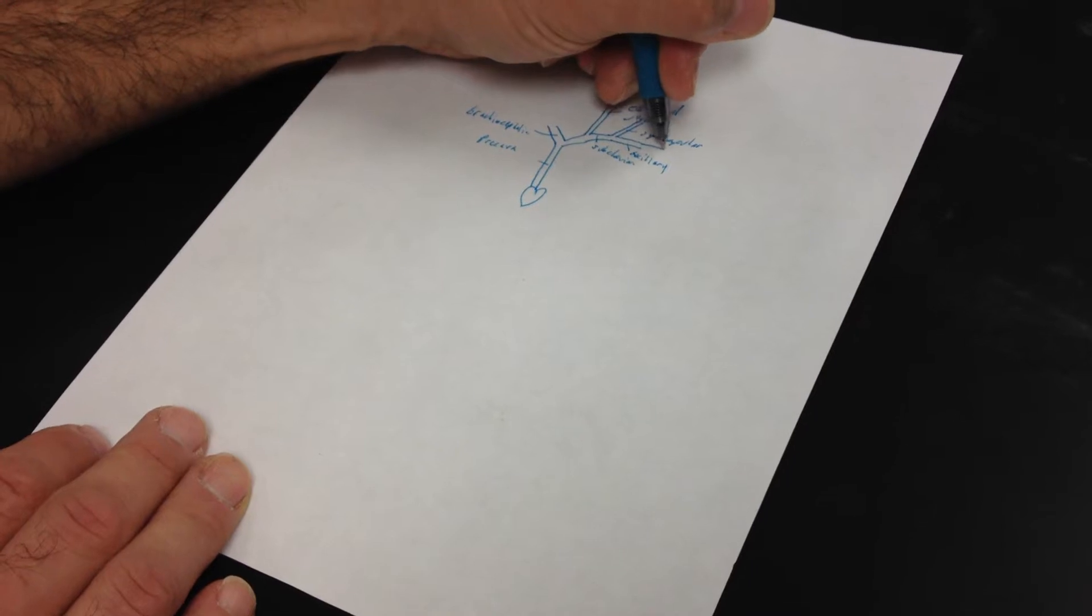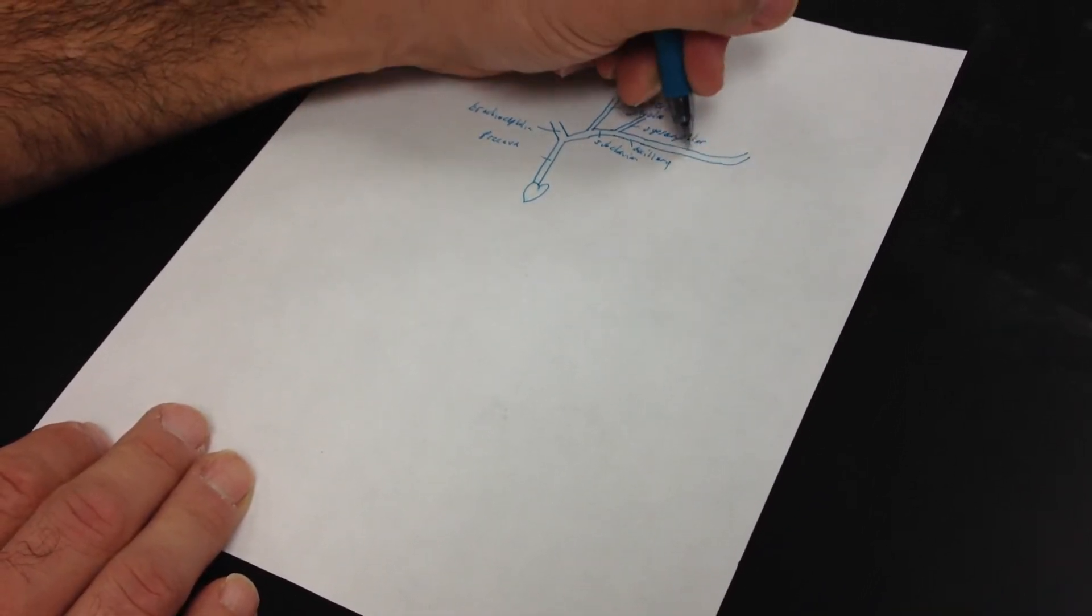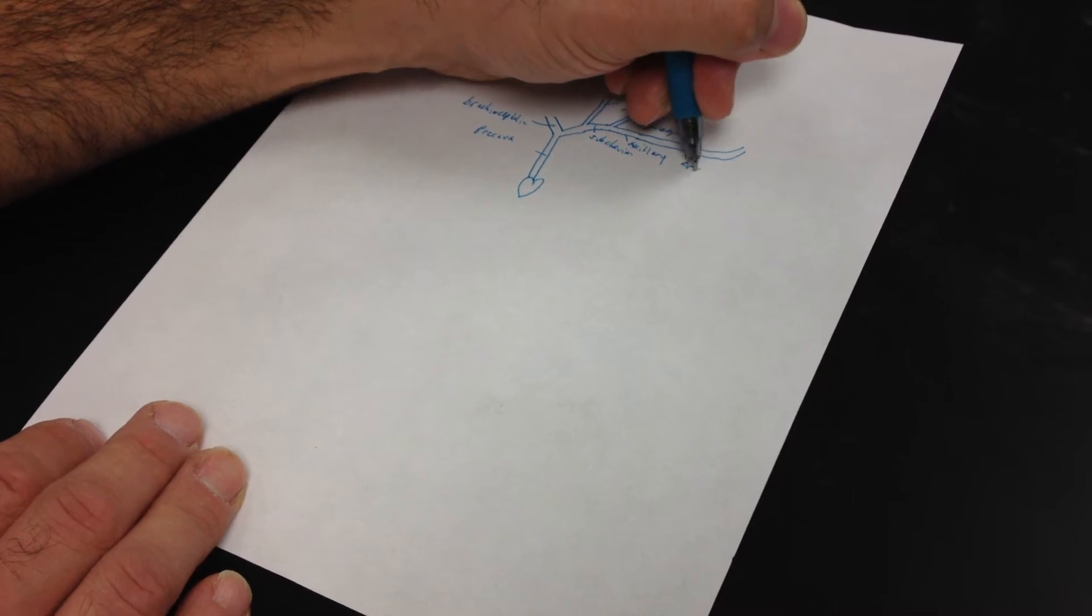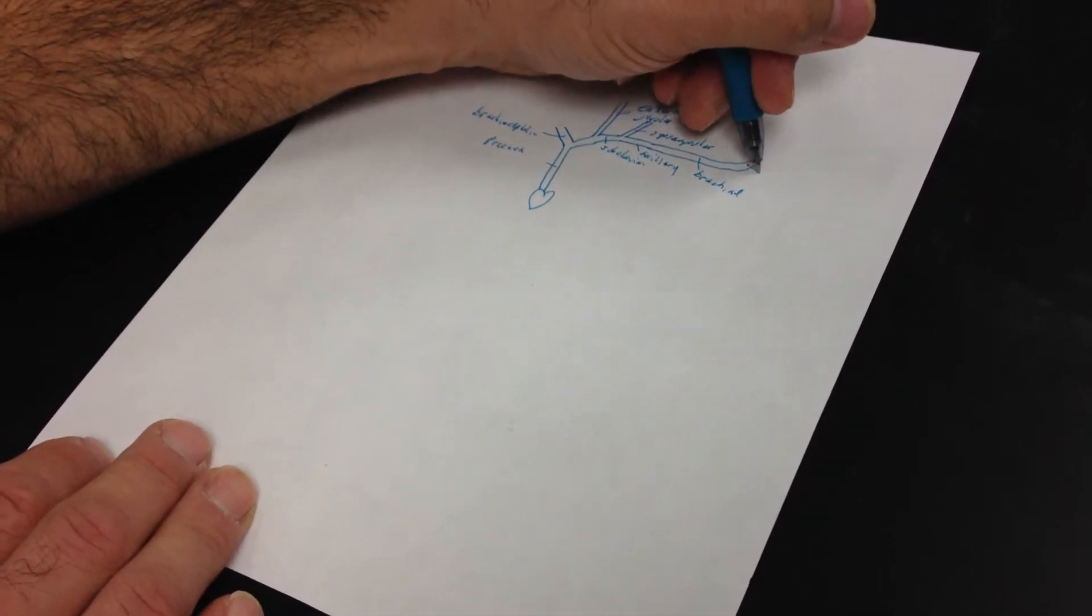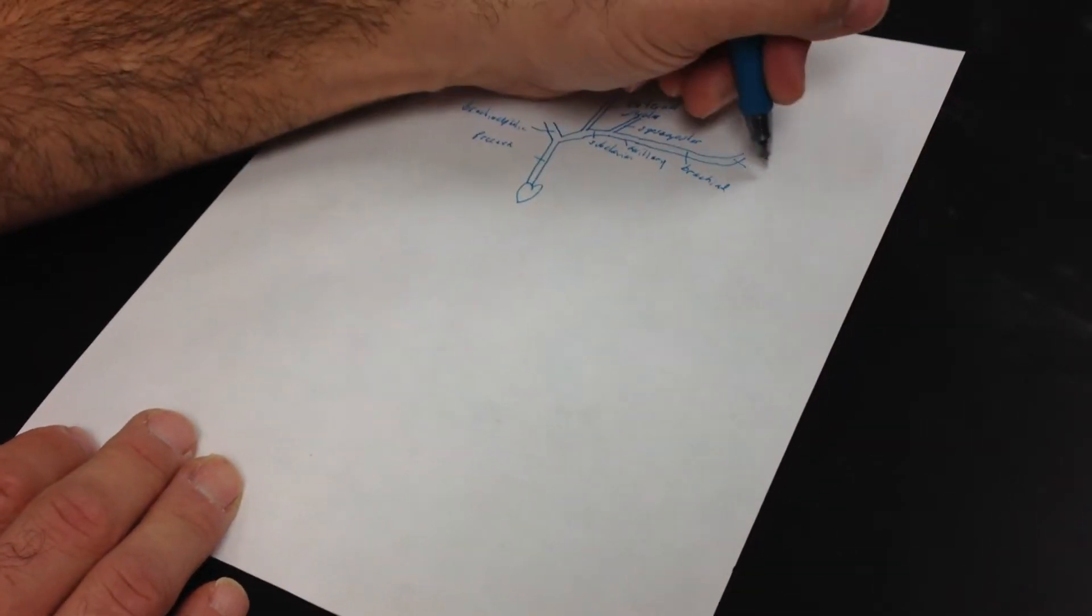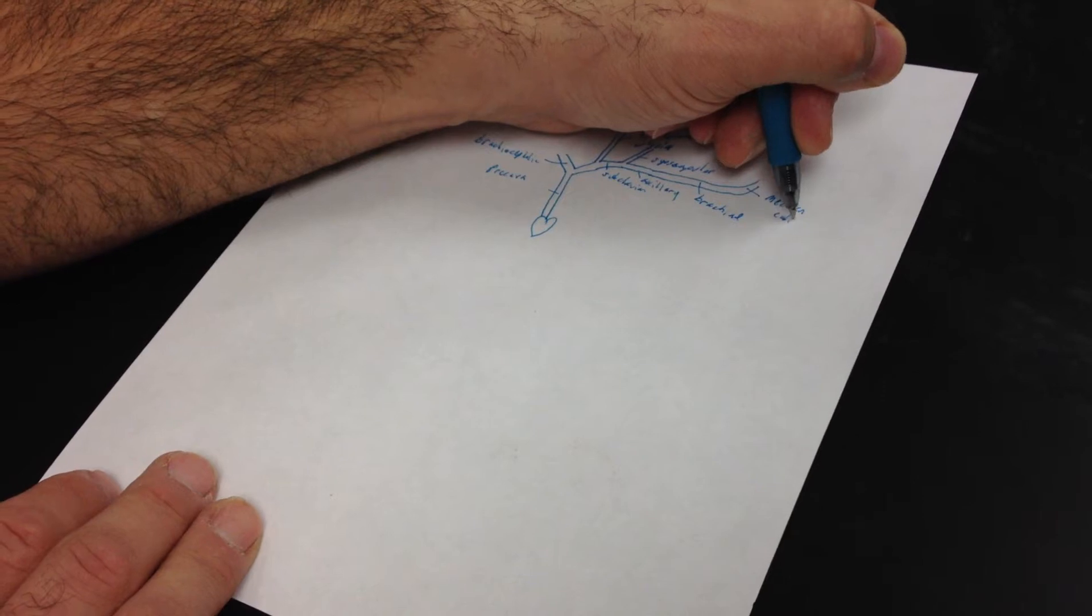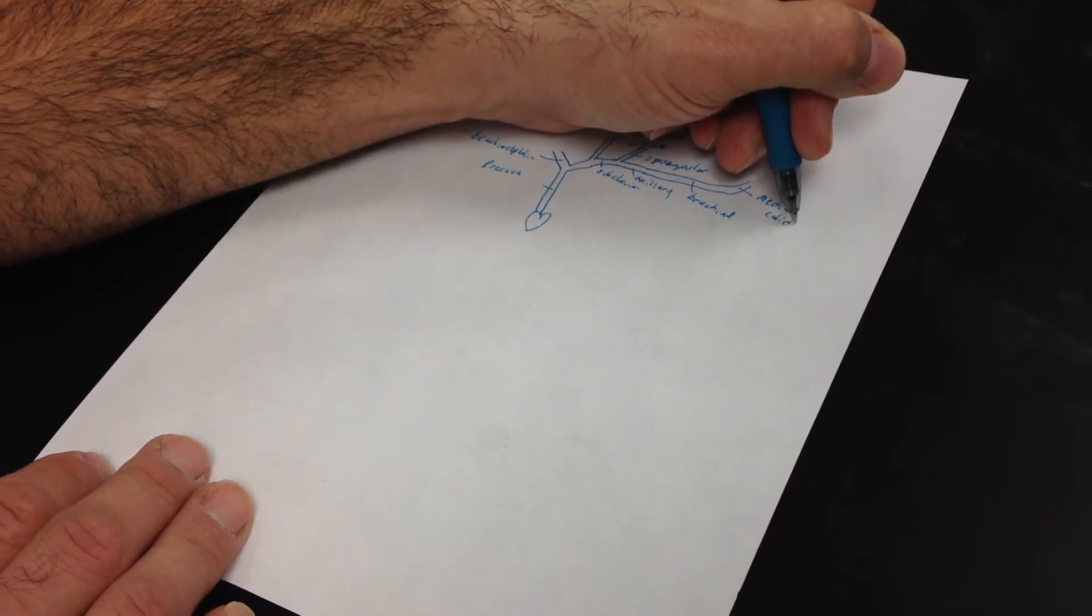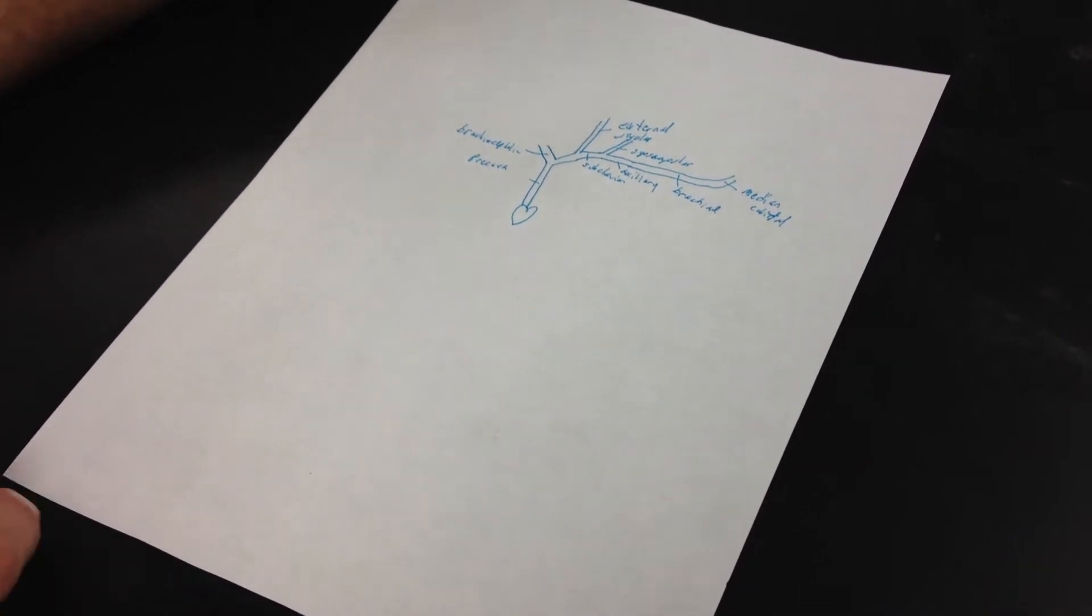And the axillary vein is going to continue on along the arm and become the brachial vein. And then right at the elbow, where it starts to curve upward, we call it the median cubital. Is it D or T? Cubital? I can't remember if it's D or T.